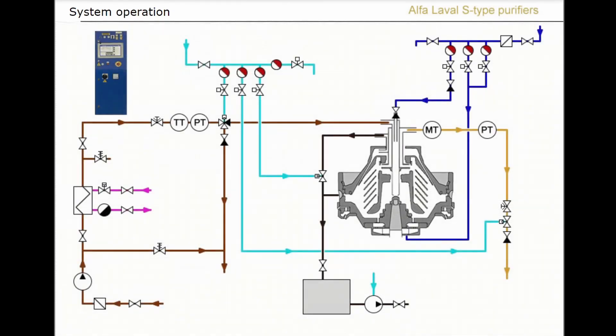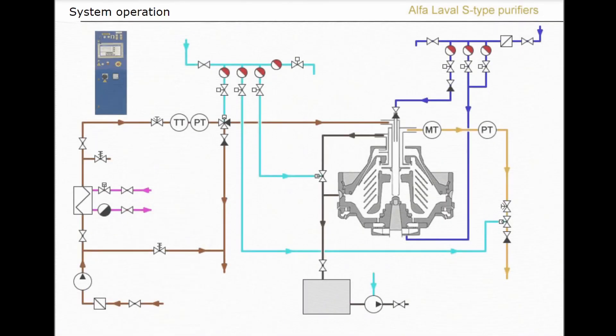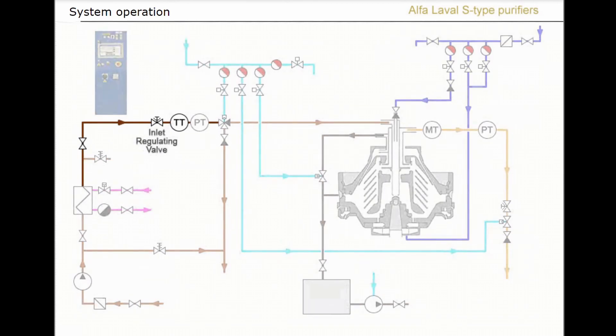The feed pump delivers fuel oil from the heavy fuel oil settling tank to the separator via a heater. The heater, the rate of oil supplied to the separator, is controlled by an inlet regulating valve.